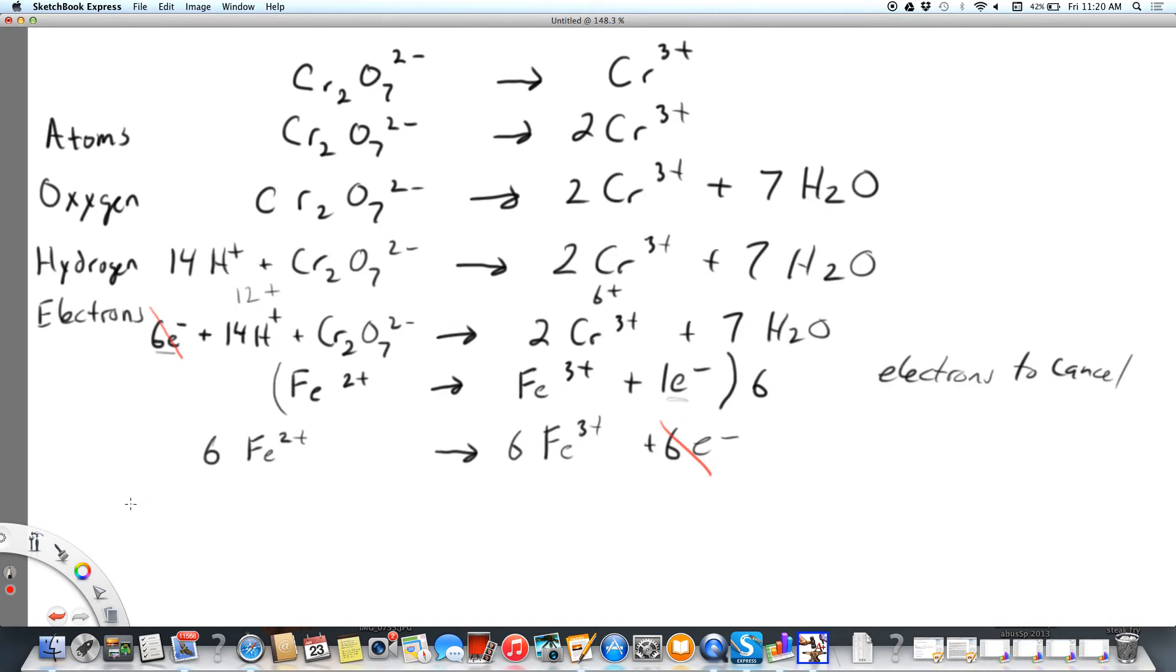Let's add these two together. I'm going to start with 14H⁺ plus one dichromate, and then I'm going to bring down my six ferrous ions. Then I am going to bring down my 2Cr³⁺ plus 7H₂O plus 6Fe³⁺.